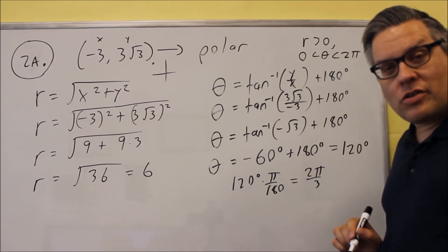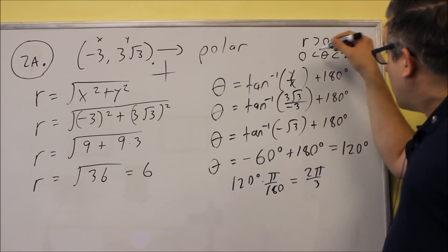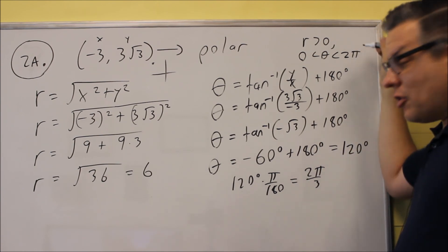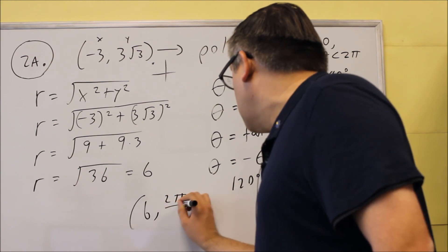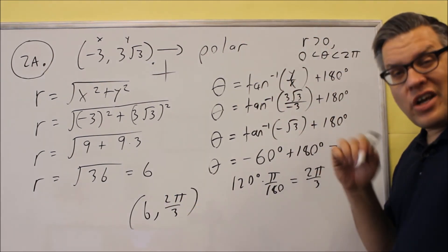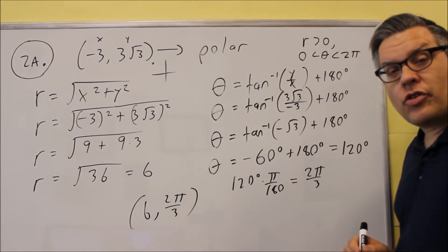So you can do it all in radians or degrees, but you want to make sure you express your answer in radians because of this statement here. When you write your answer, you want to write it as a coordinate: 6 comma 2 pi over 3.